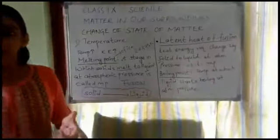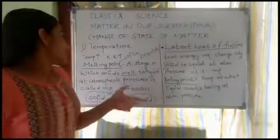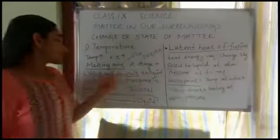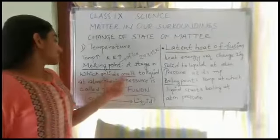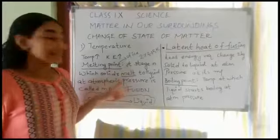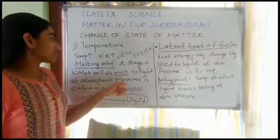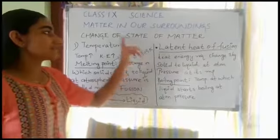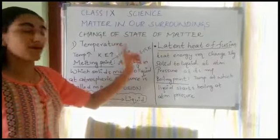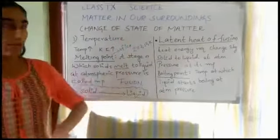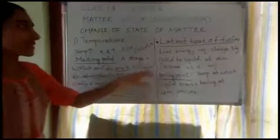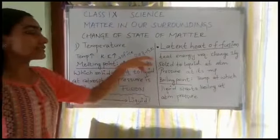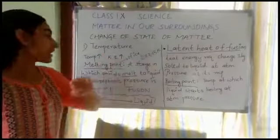The stage at which the solid melts into a liquid at atmospheric pressure is called its melting point. At that particular temperature the melting point will be observed — when the solid melts into the liquid at atmospheric pressure. The melting point of ice is 273.15 Kelvin. For calculations we round off and take 273 Kelvin.